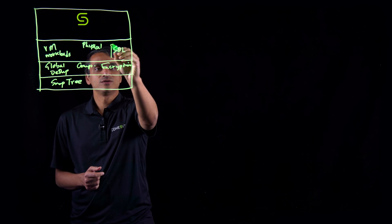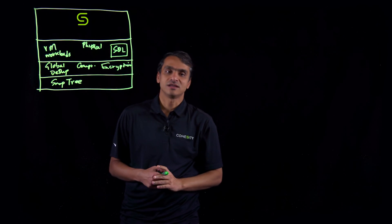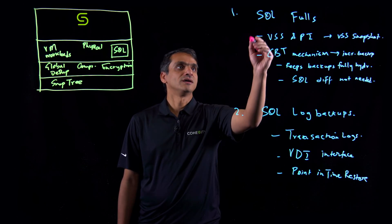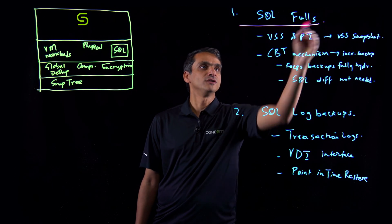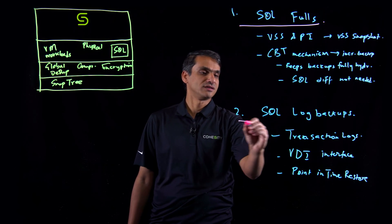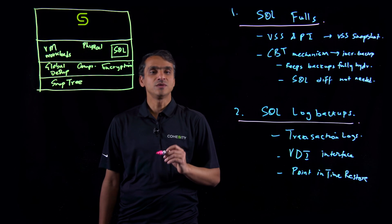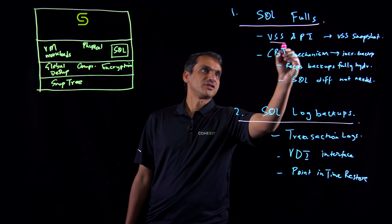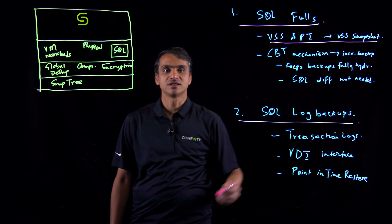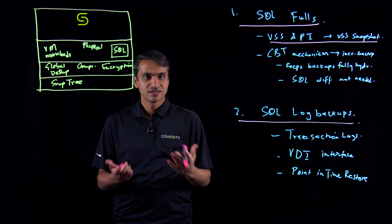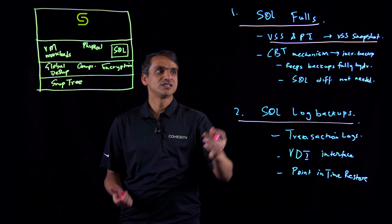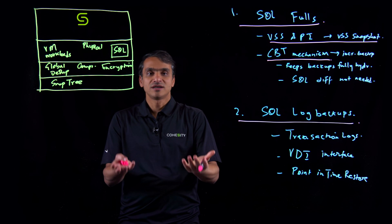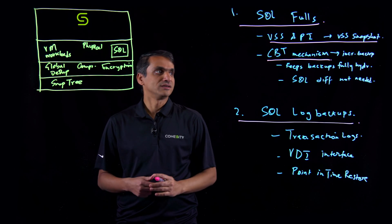Today we are going to talk about SQL protection in more detail. SQL backups come in two different flavors: the first is SQL full backups and the second is SQL log backups. SQL full backups make use of the VSS API to trigger a VSS snapshot, and then we use change block tracking, or CBT, to incrementally back up the snapshot.